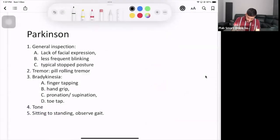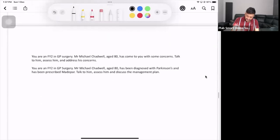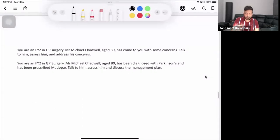Let's begin Parkinson's. What are the questions that they can give to you? These are the two possible scenarios that you might get. You are FY2 in GP surgery. Your patient is Mr. Chadwell. He is 80 years of age, has come to you because of some concerns. Talk to him, assess him and address his concern. That's absolutely okay. You are after in surgery. The patient is 80, has been diagnosed with Parkinson's and is prescribed Mardopar. What is this Mardopar?